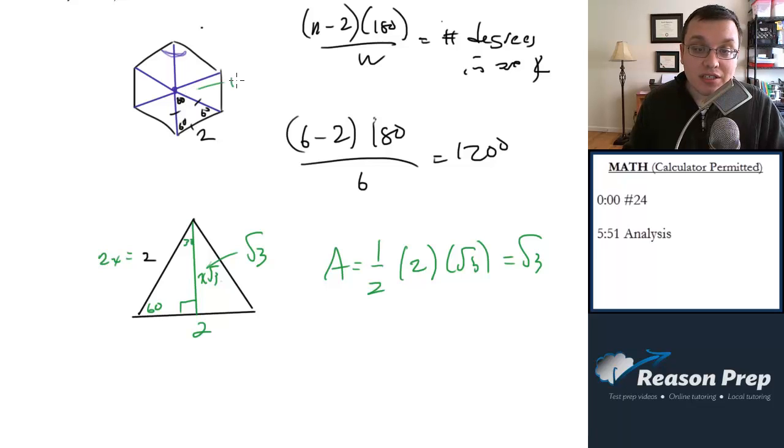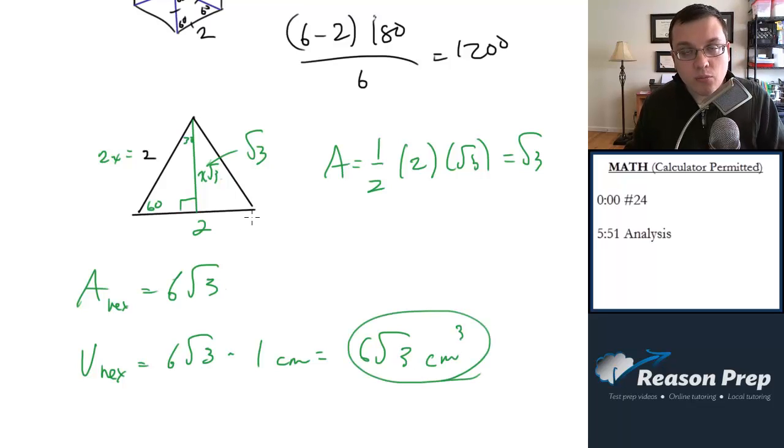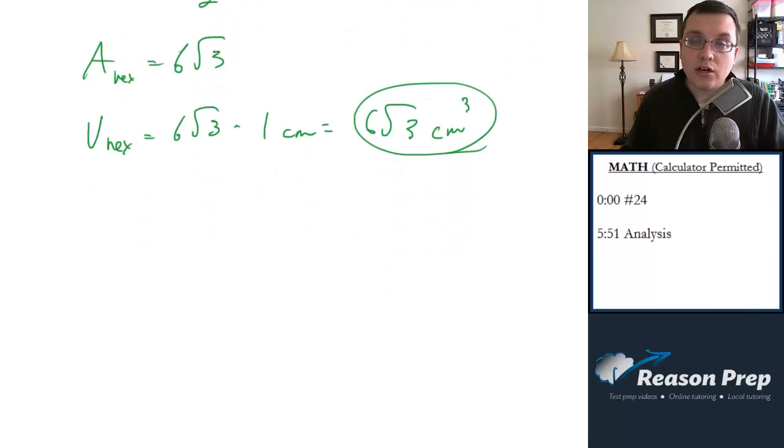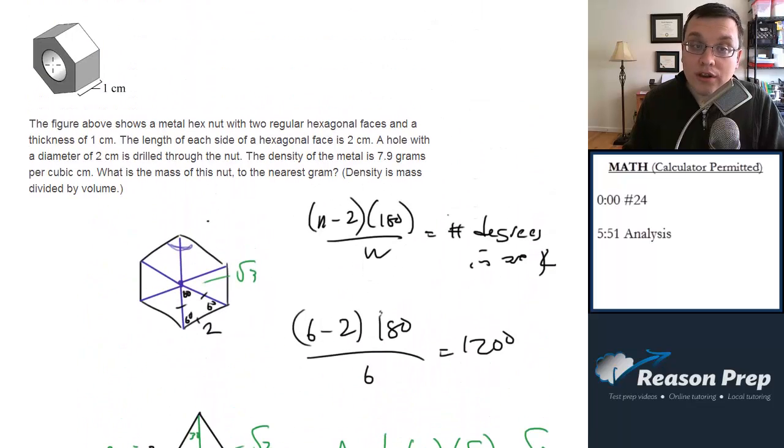Now, we've got 6 of these triangles. Each of them has got an area of radical 3. So the whole area of this face, area of the hexagon, is just going to be 6 of these radical 3s. So 6 times radical 3. Now we multiply this to get the volume of the hexagon. It's going to be 6 radical 3 times 1, which is 6 radical 3 cubic centimeters. We've got our volume. We've got our density. Now we can go ahead and find the mass of this nut. Well, actually, no, not yet, because now we have to incorporate the fact that this nut has a hole in it.